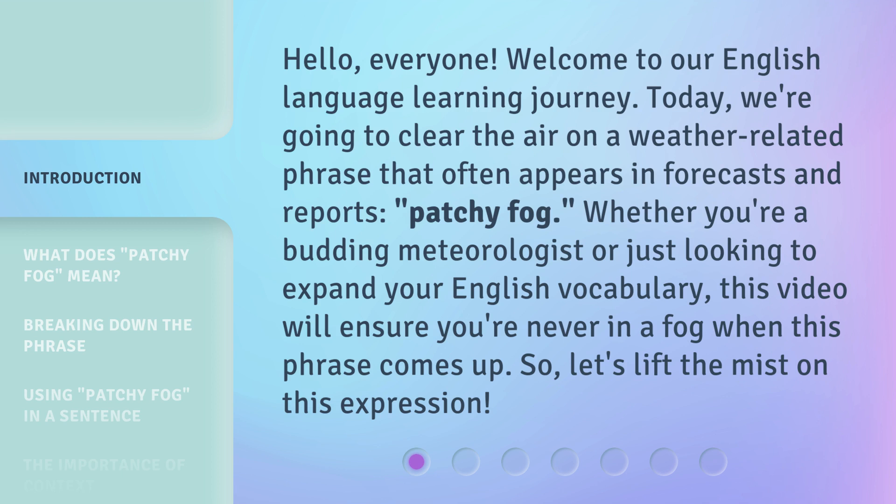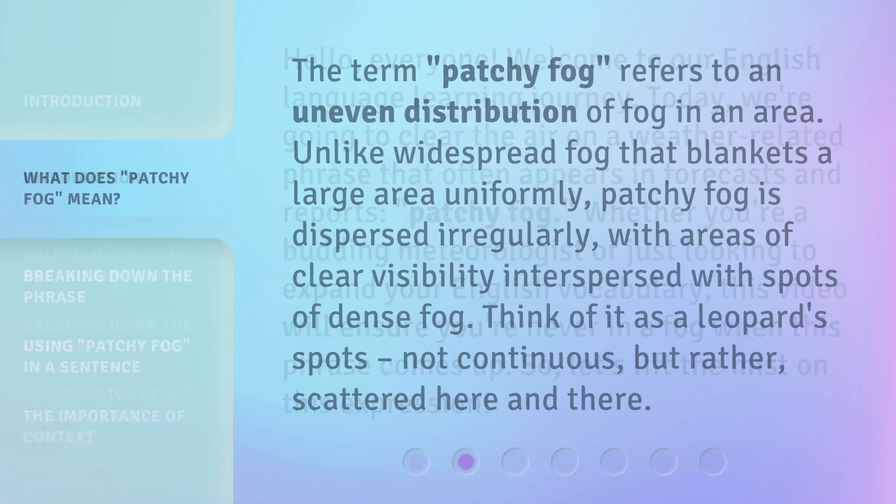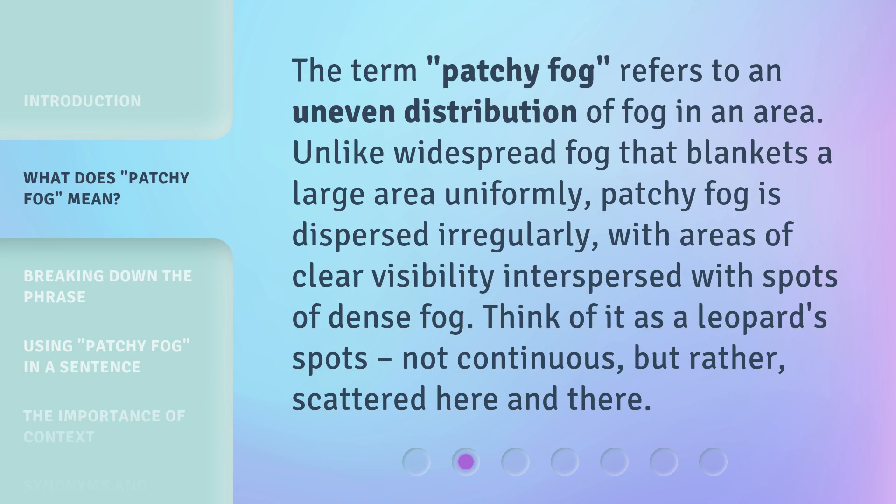So let's lift the mist on this expression. The term patchy fog refers to an uneven distribution of fog in an area. Unlike widespread fog that blankets a large area uniformly, patchy fog is dispersed irregularly, with areas of clear visibility interspersed with spots of dense fog. Think of it as a leopard's spots — not continuous, but rather scattered here and there.